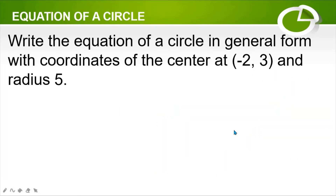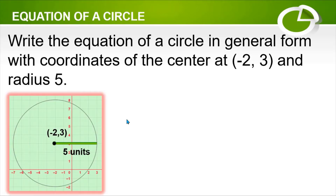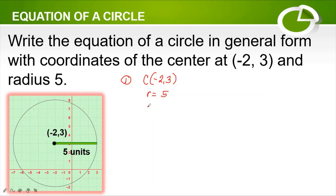Let us have another example: write the equation of the circle in general form with coordinates of the center at point negative 2, 3 and radius 5. Let us illustrate the given problem. The center is at point (−2, 3) and the radius is 5 units. First step: let us identify the given. The center is at point (−2, 3) and the radius r is equal to 5.